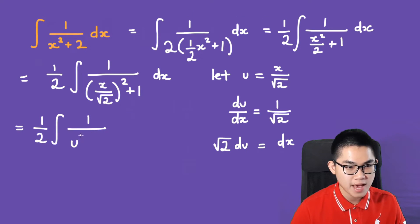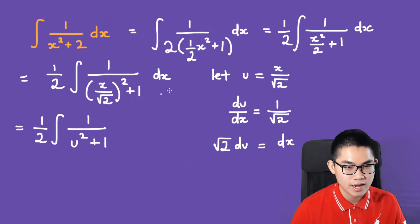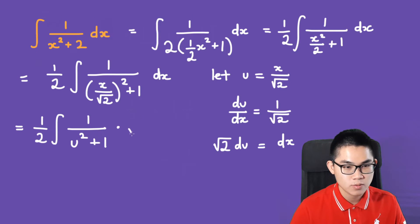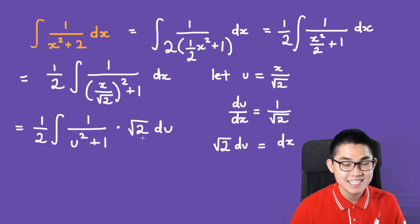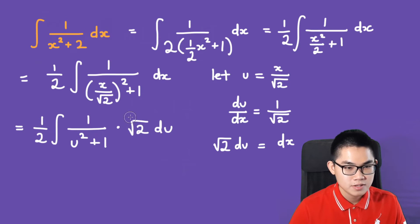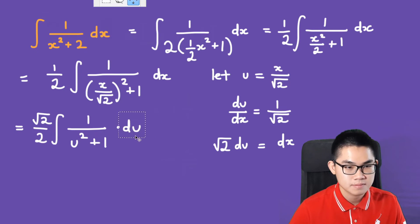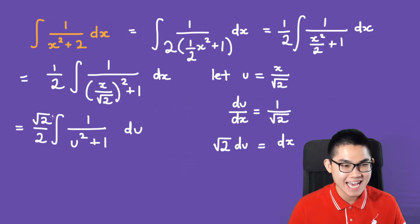Substituting back, we replace x over √2 with u, giving us 1/2 times the integral of 1 over (u squared plus 1), and dx becomes the square root of 2 times du. Since √2 is a constant, we bring it outside the integral, placing it in the numerator. The next step is to find the antiderivative of 1 over u squared plus 1.